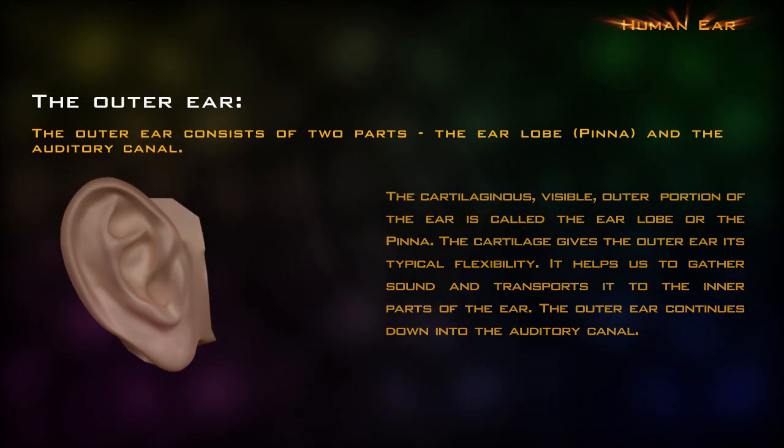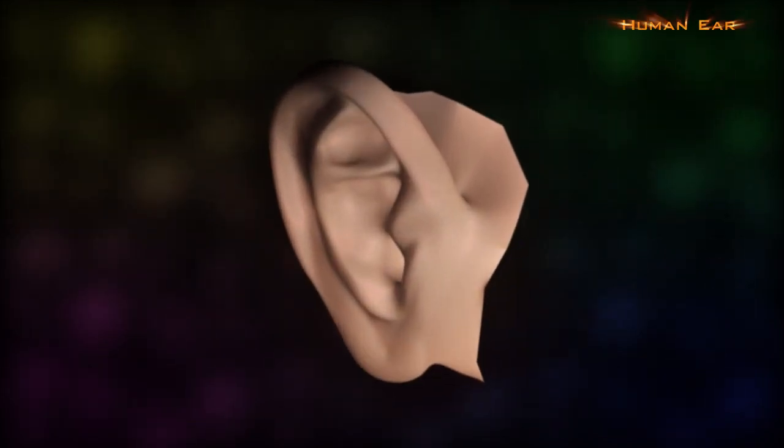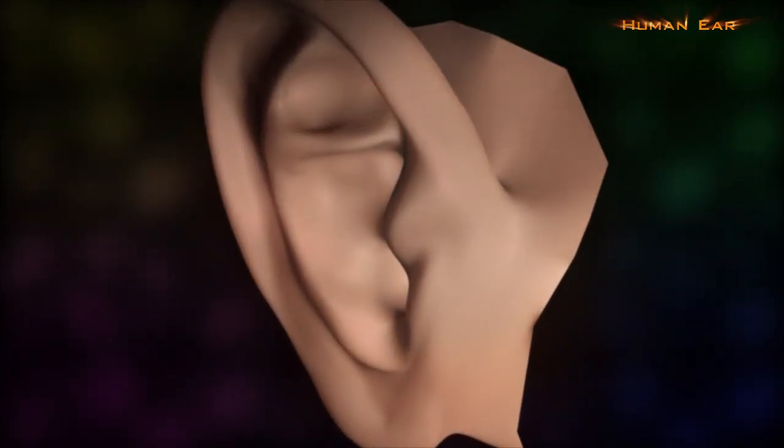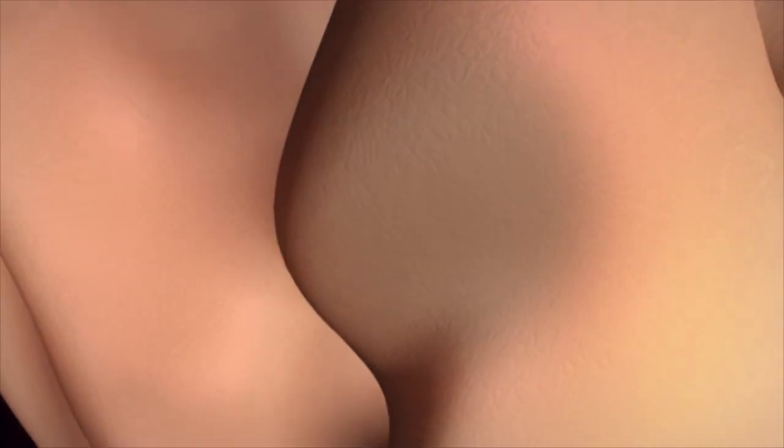The outer ear continues down into the auditory canal. The dead end of the auditory canal is covered by the tympanic membrane, which marks the beginning of the middle ear.